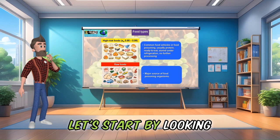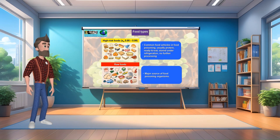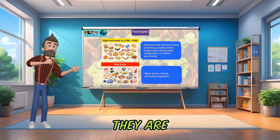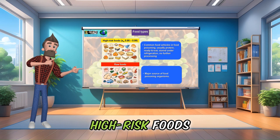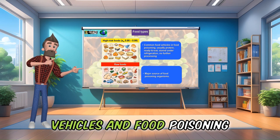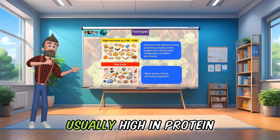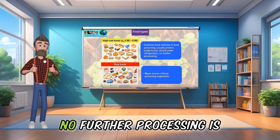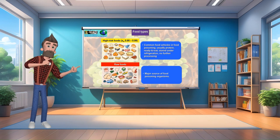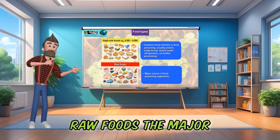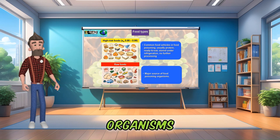Let's start by looking at food. There are four different food types. The first is high-risk foods — these are common food vehicles in food poisoning, usually high in protein, stored under refrigeration, and no further processing is going to take place. The second group is raw foods, the major source of food poisoning organisms.